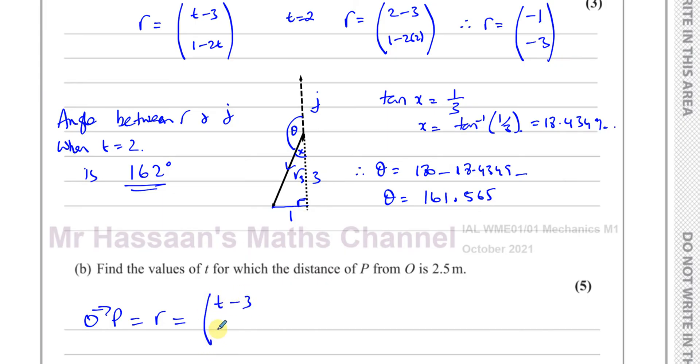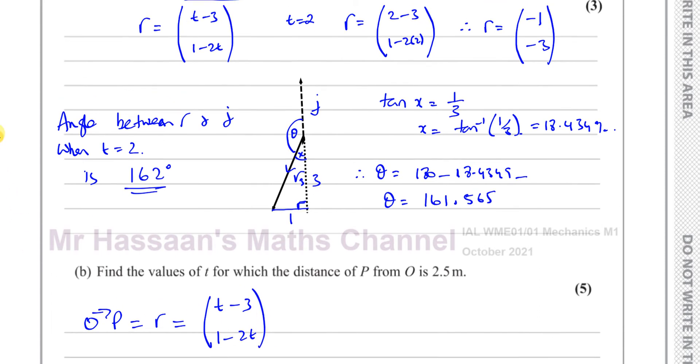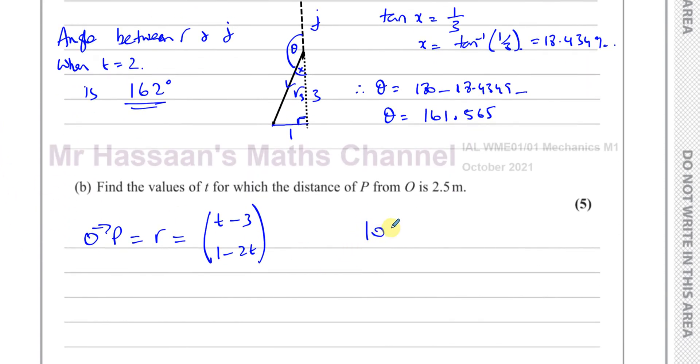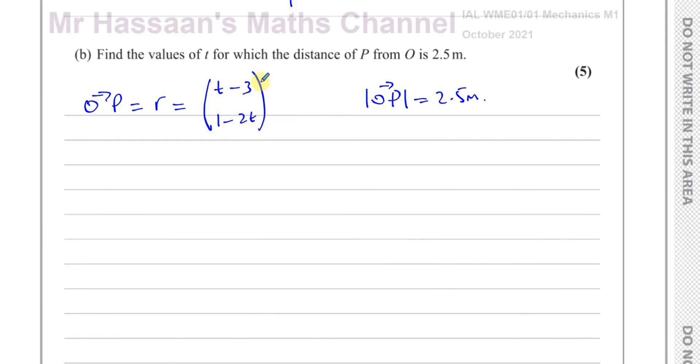And we need to find when the magnitude of P from O is 2.5 meters. So how do you find the magnitude of a vector? Well you square the components of i and the components of j, add them together and find their square root.